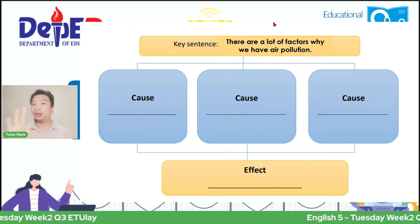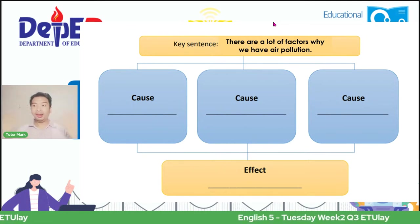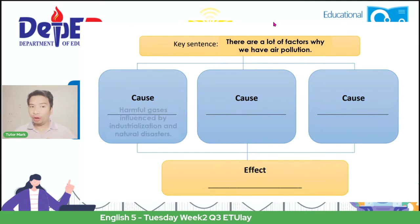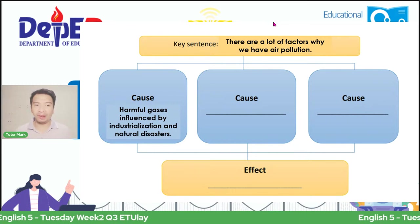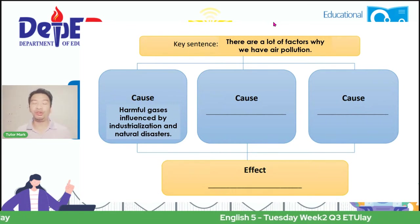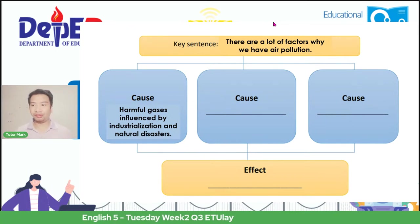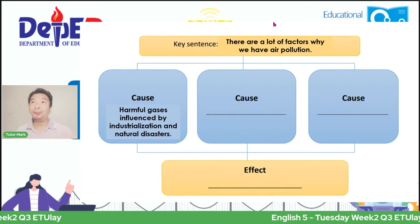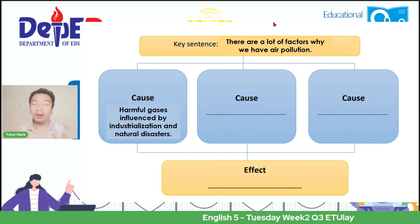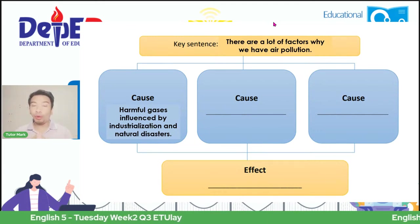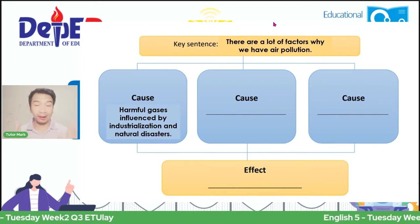We said there are three causes. These are the following: first, because of harmful gases influenced by industrialization and natural disasters such as volcanic eruption or forest fires. These are the first answers for our summary being built. As you can see, it came from a guide question that we can form through a graphic organizer. Remember the five concepts or key ideas I shared earlier? This is how it goes.